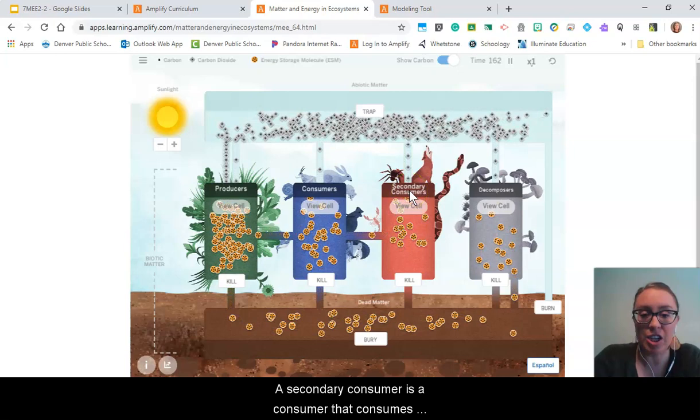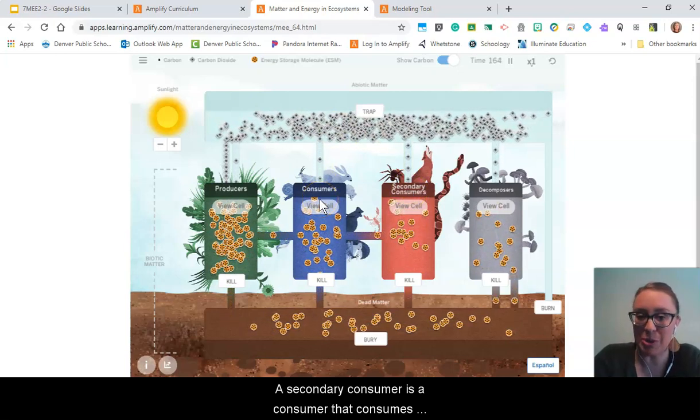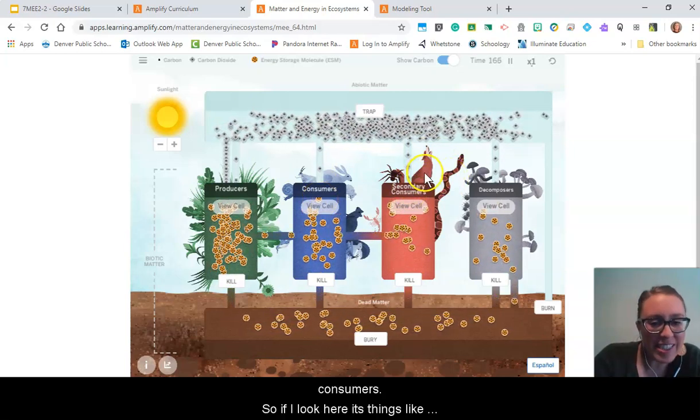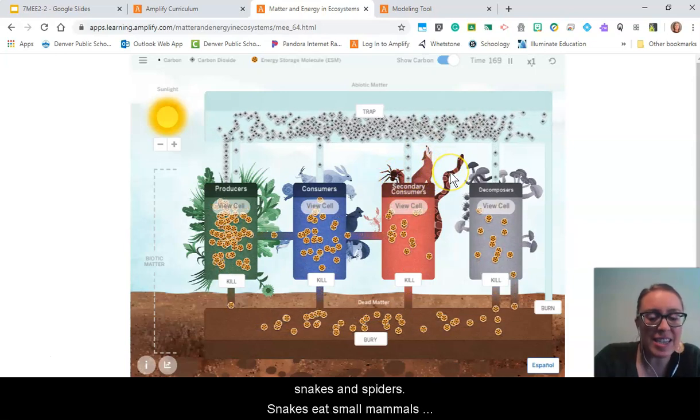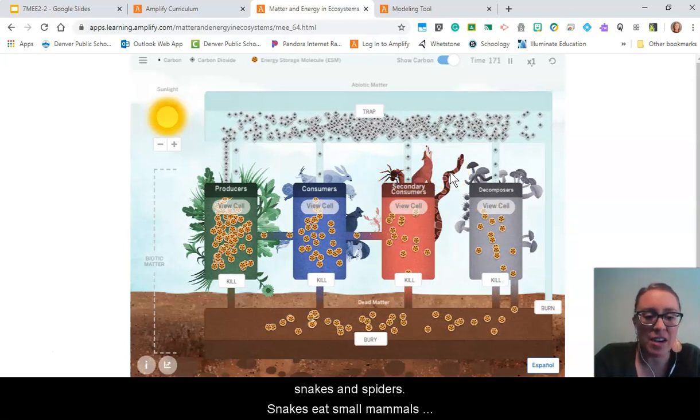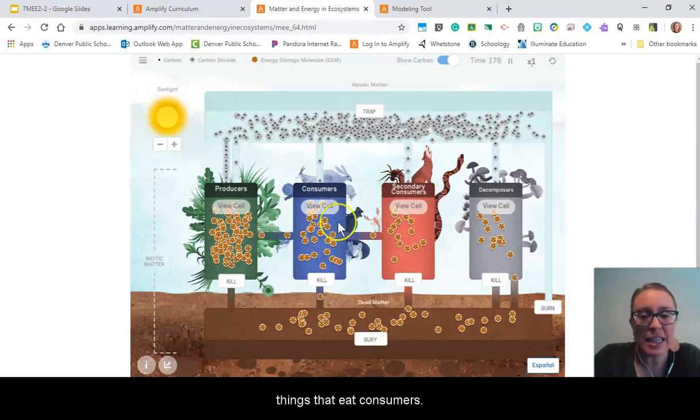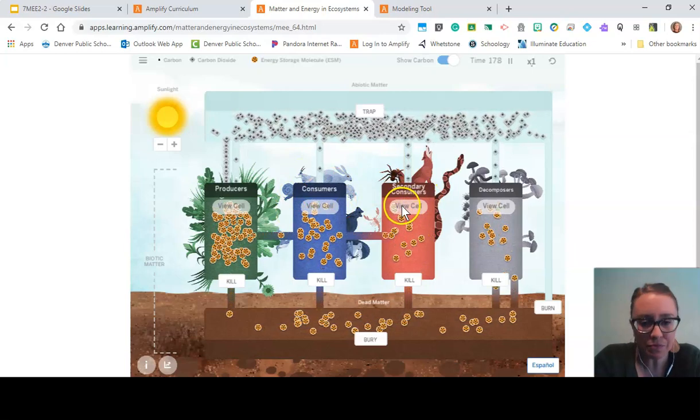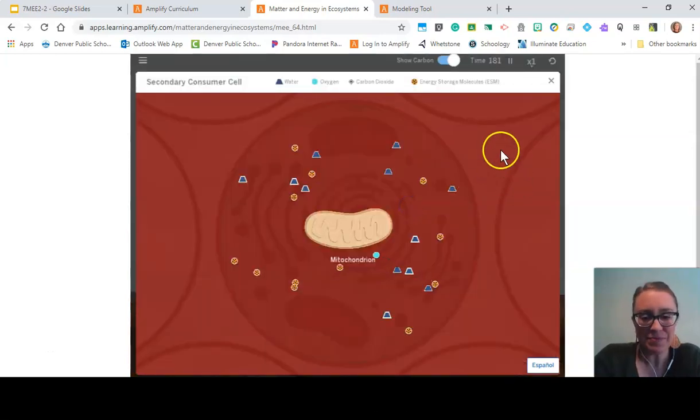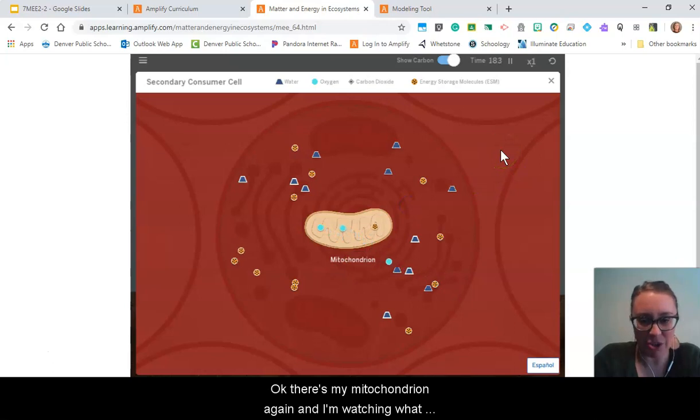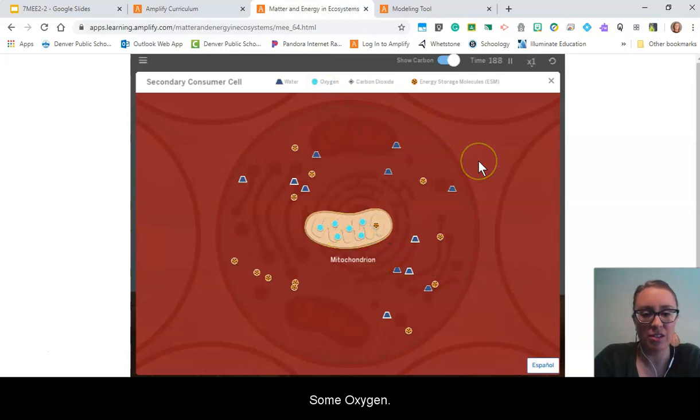Let's check that out in the secondary consumer. A secondary consumer is a consumer that consumes consumers. If I look here, it's things like snakes and spiders. Snakes eat small mammals like a mouse, and a spider can eat other bugs. So they're things that eat consumers, they're not vegetarians. There's my mitochondria. And again, I'm watching what goes in. I'm seeing some oxygen and some energy storage molecules going in. I saw some carbon dioxide and some water coming out.